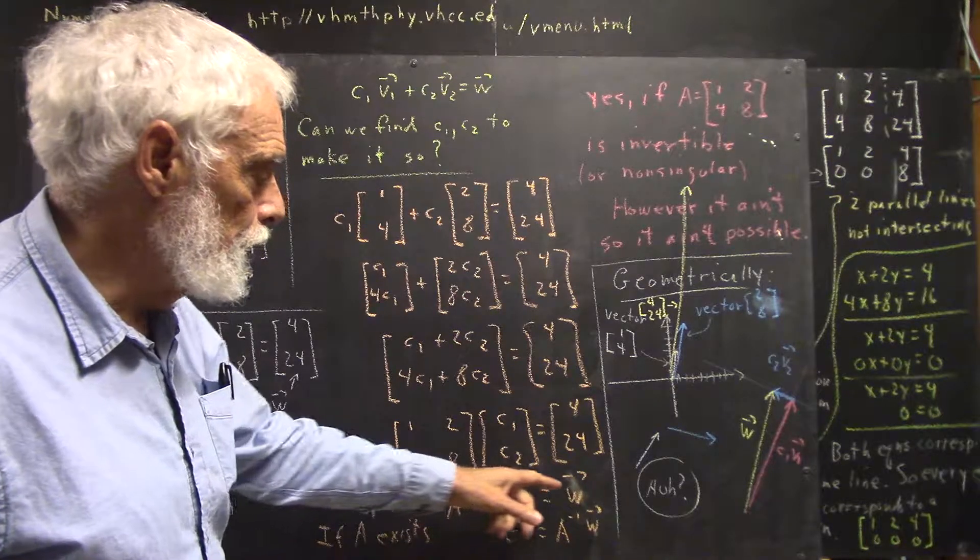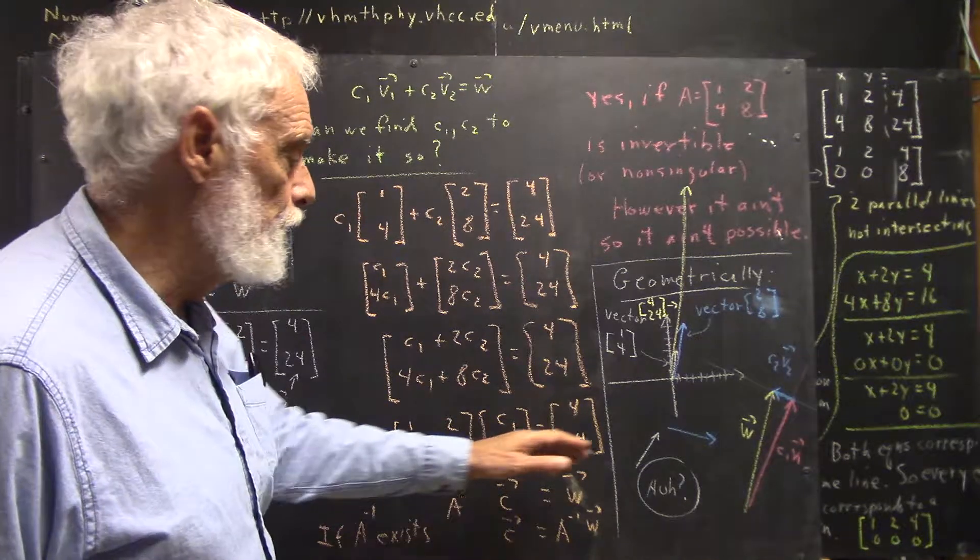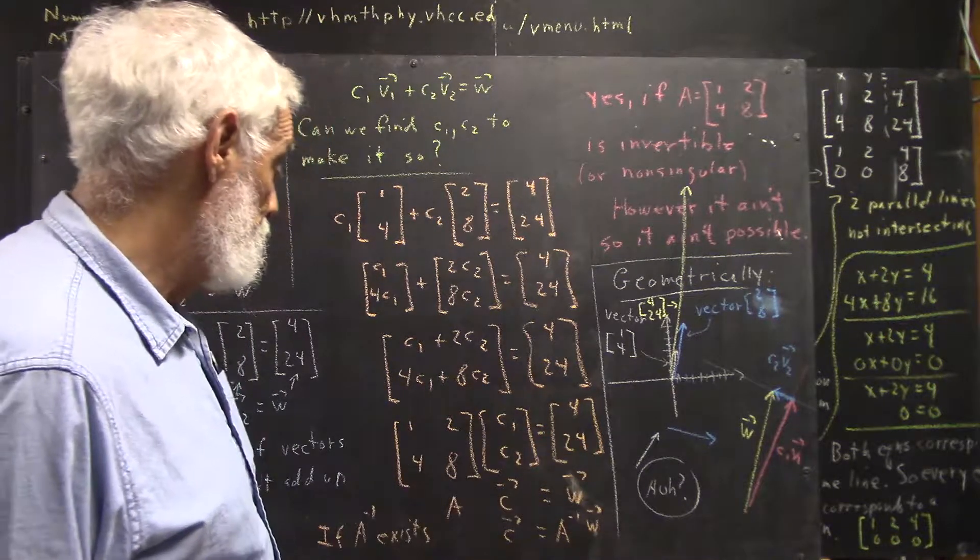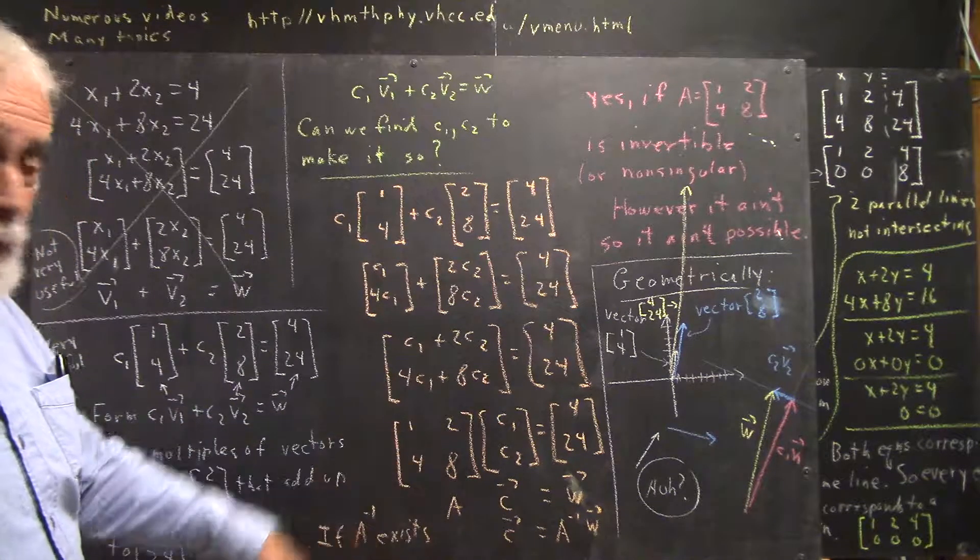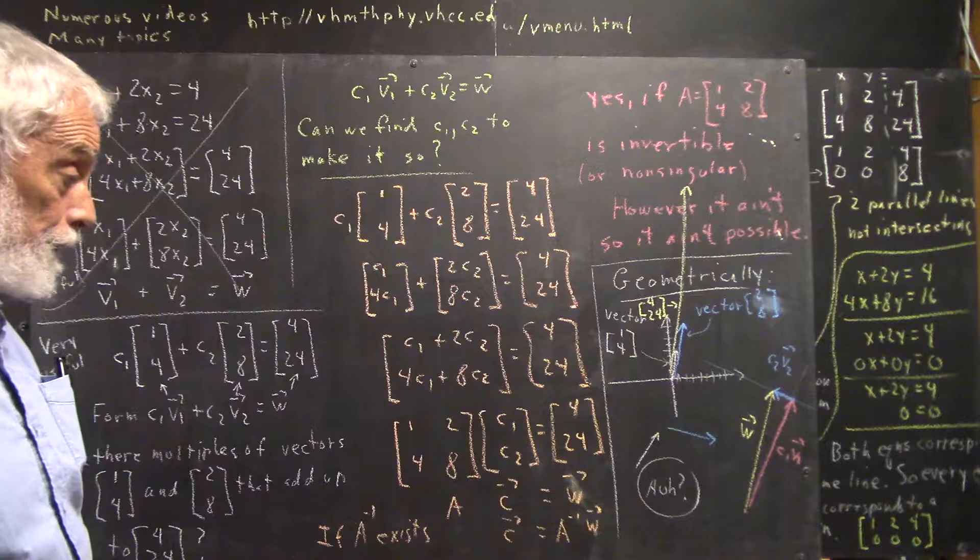Well, this is our old friend. A inverse doesn't exist. The determinant is clearly zero if you know about determinants, or if you row reduce it, you're going to get a row of zeros down here.